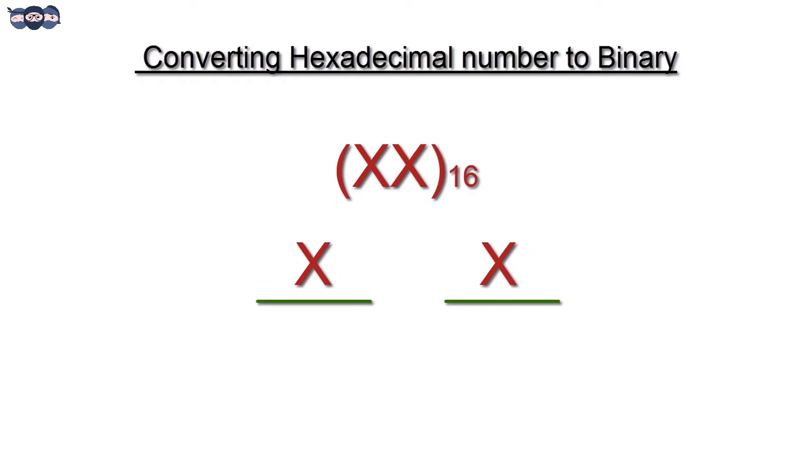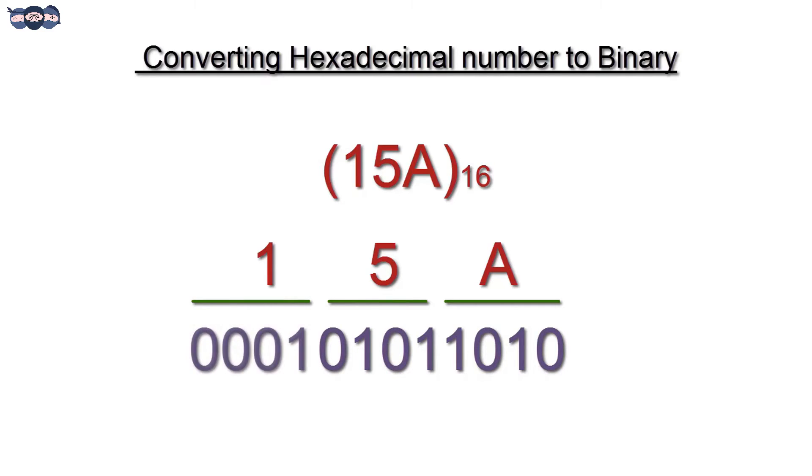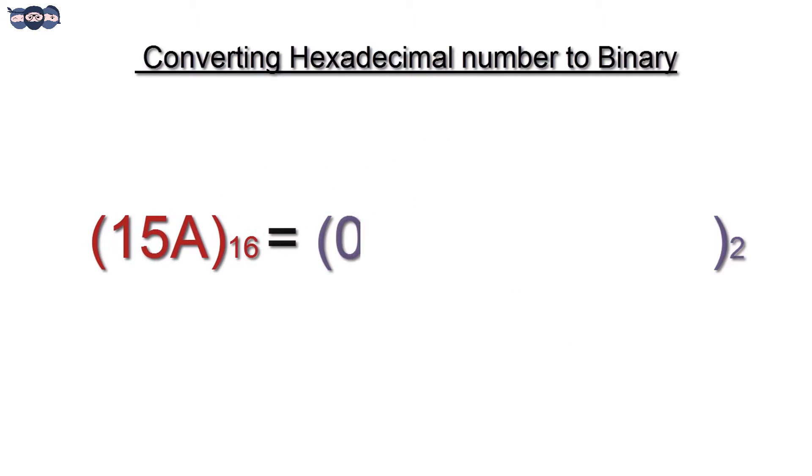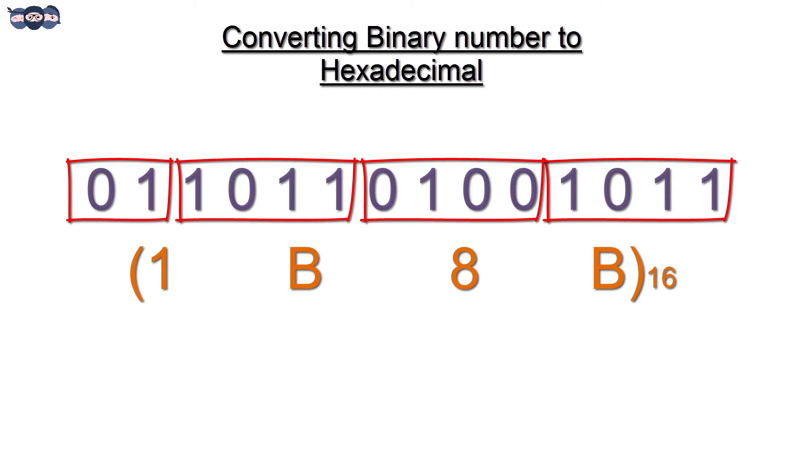Similarly, converting hexadecimal to binary is simple. One needs to represent each digit in hex system as 4 binary digits. Binary to hexadecimal conversion is carried out by clubbing 4 digits from LSB and writing their hex representation.